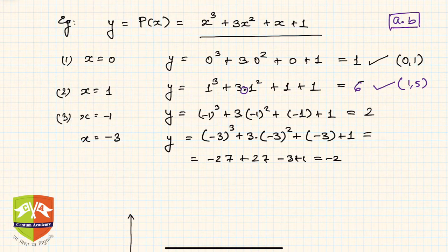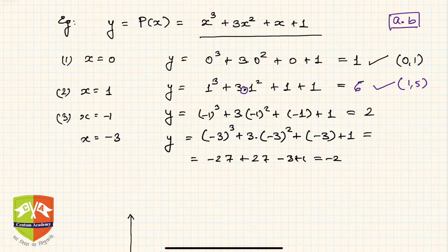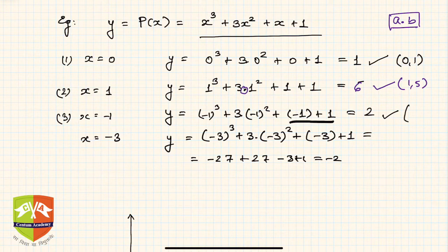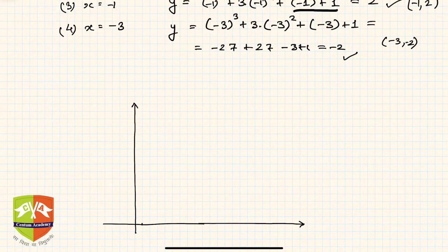When x = -1, we get (-1)³ + 3·(-1)² + (-1) + 1. The -1 and +1 cancel each other out, leaving -1 + 3 = 2, so the point is (-1, 2). When x = -3, the value is -2, giving the point (-3, -2).